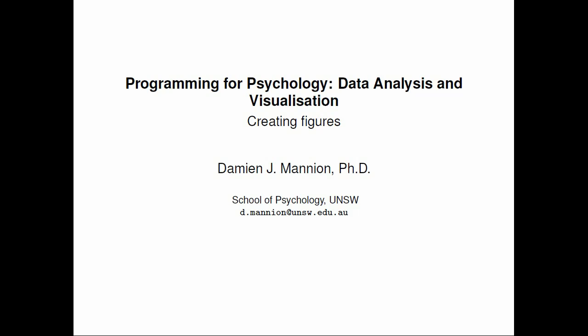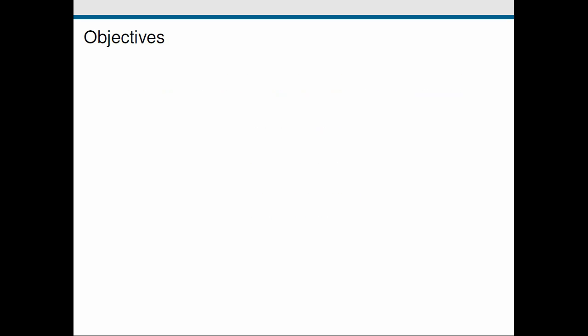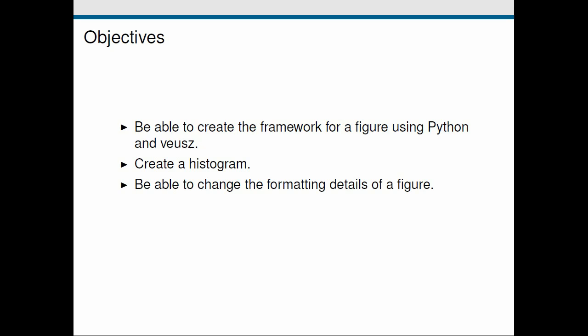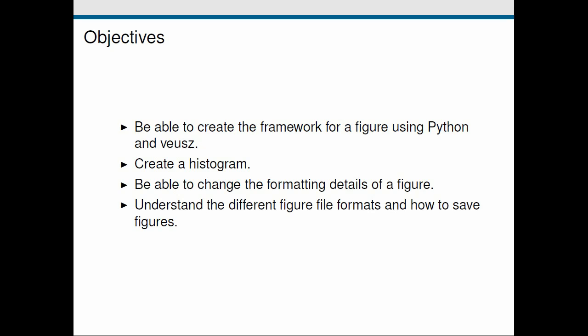Hi everybody and welcome to the next in this series of screencasts on programming for psychology, data analysis and visualization. In this screencast we're going to look at how we can use Python to create figures. We want to create the framework to make a figure using Python and this package called VEUS. We'll use this to make a histogram as an example, look at how we can change the formatting details to make it publication quality, and look at different file formats we can save a figure in.